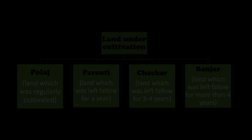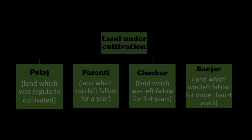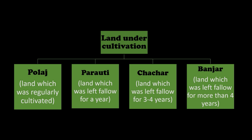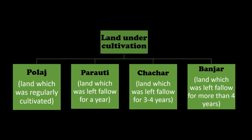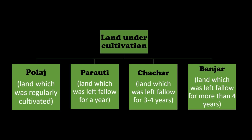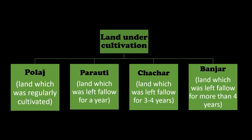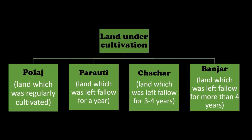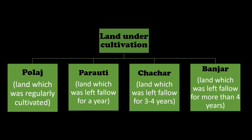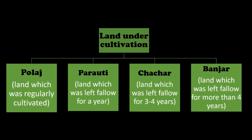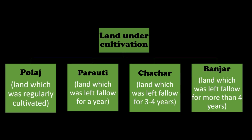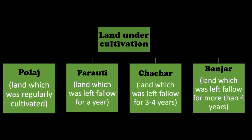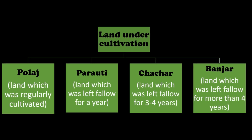In order to fix the land revenue accurately, the land under cultivation was divided into four categories. The first was Pollage — land which was fertile and had been continuously cultivated. Second, Parothi — land which was left uncultivated for a year after each round of crop production. Third, Chachar — land left fallow for three to four years after the production of each crop. Lastly, Banjar — cultivable wasteland left uncultivated for more than four years, seldom brought into use.